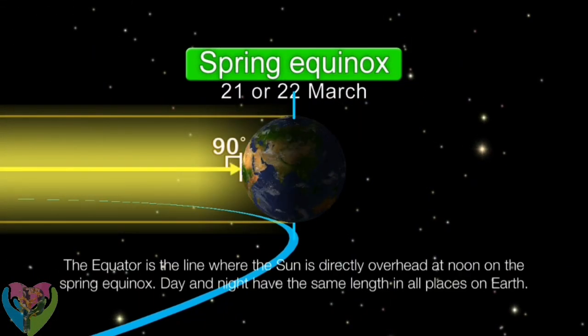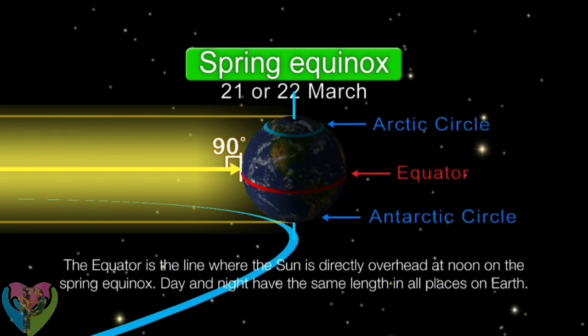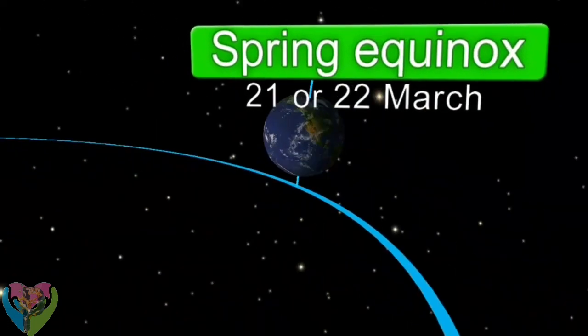The equator is the line where the Sun is directly overhead at noon on the spring equinox. Day and night have the same length at all places on the Earth.